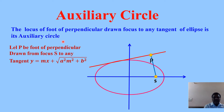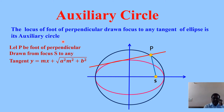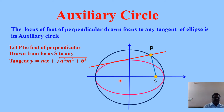Collecting all such feet of perpendicular gives a locus. That locus is the auxiliary circle of the ellipse. The equation of the auxiliary circle is x² + y² = a², since its center is (0,0) and its radius equals the semi-major axis a. We have to show that the locus is x² + y² = a².